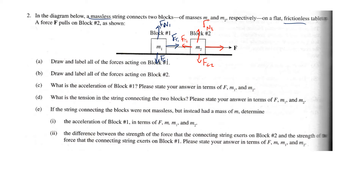What's the acceleration of block one? Both blocks have the same acceleration. F = ma, so a equals F over m. The force acting on the system is just F, and the total mass is m1 plus m2, so a equals F over (m1 + m2).